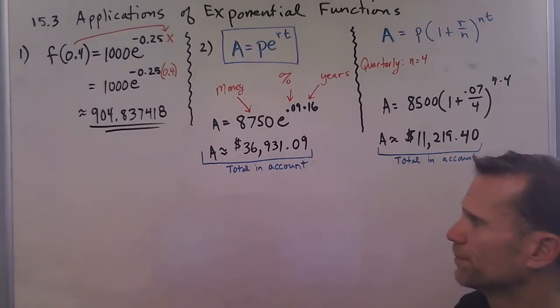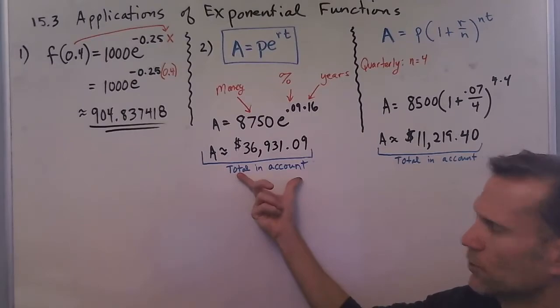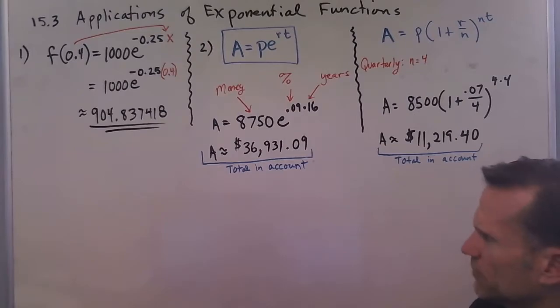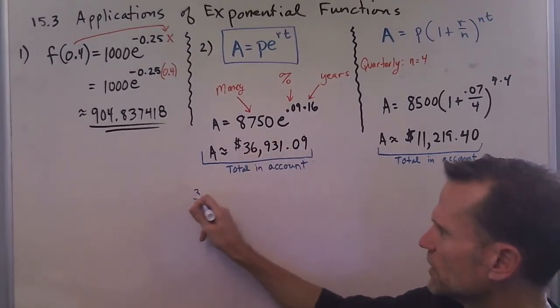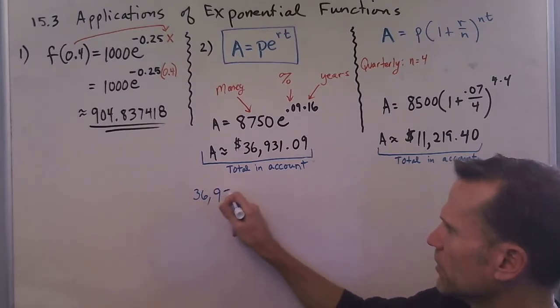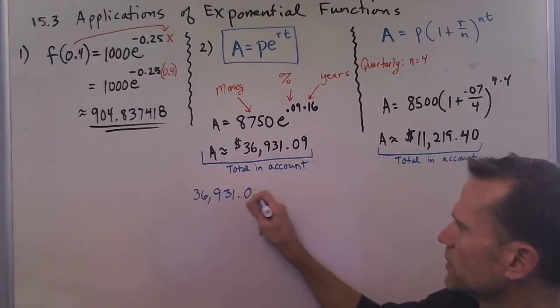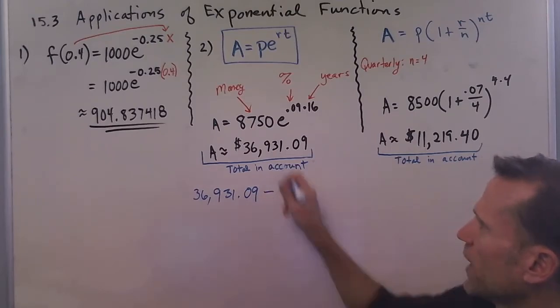Sometimes they ask you what was the interest. Now this is the total amount in the account. So if they ask for the interest, you would have to take this new value, $36,931.09 approximately, and subtract off your initial investment.